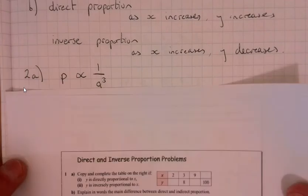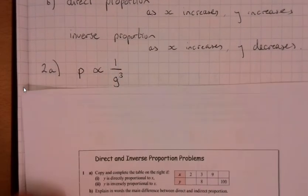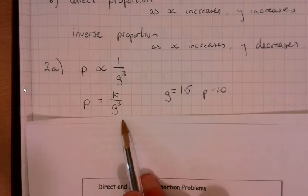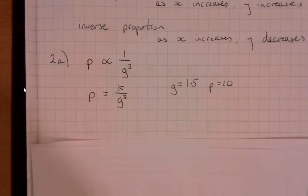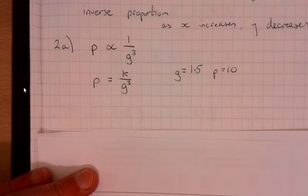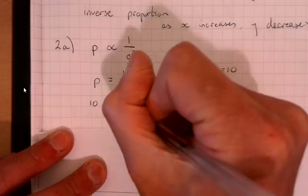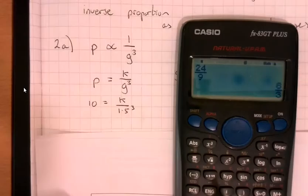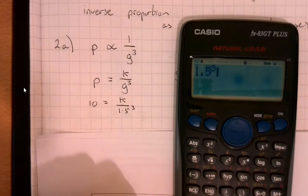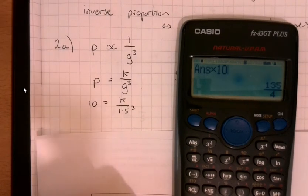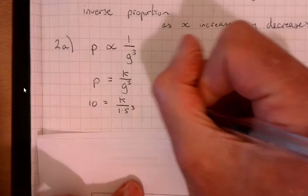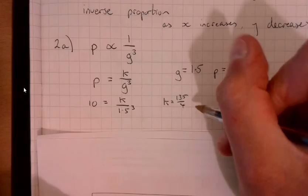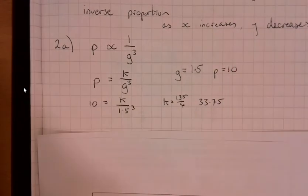Question two. I've already put some information down there. We've got P is inversely proportional to the cube of g. So I put that down. And I've also written down, so we've kind of started the equation. And I've given the information. What we need to do here is we need to work out what the k bit is. So let's just fill the information in. We've got 10 equals k over 1.5 cubed. So it'll just be 10 multiplied by 1.5 cubed. 1.5 cubed, multiply 10. 135 over 4. So k equals 135 over 4. If you really want it as a decimal, we've got 33.75. You might find that maybe a little bit easier to work with.